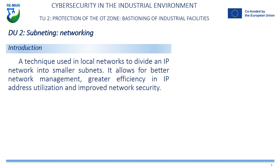This helps to avoid IP address conflicts and makes it easier to identify devices on the network. In addition to that, subnetting is also used to limit the range of broadcast transmissions in computer networks. When a device sends a broadcast packet, it is transmitted to all devices on the network. If a network is large and has many devices connected, this can cause network congestion and affect network performance.